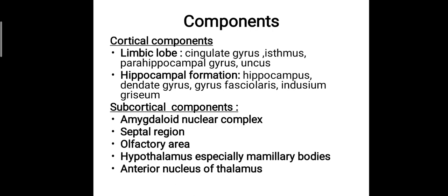The limbic lobe components include the cingulate gyrus, isthmus, the parahippocampal gyrus, and the uncus. The hippocampal formation includes the hippocampus, the dentate gyrus, the gyrus fasciolaris, and the indusium griseum.